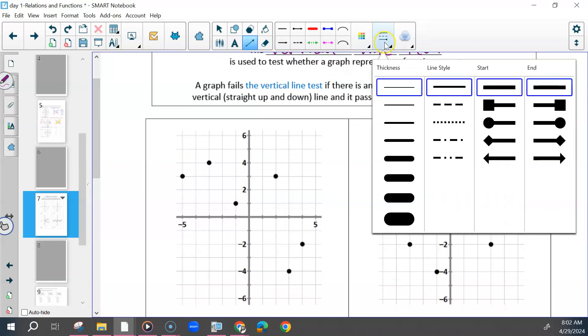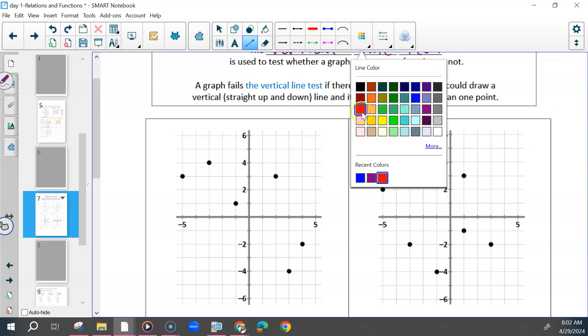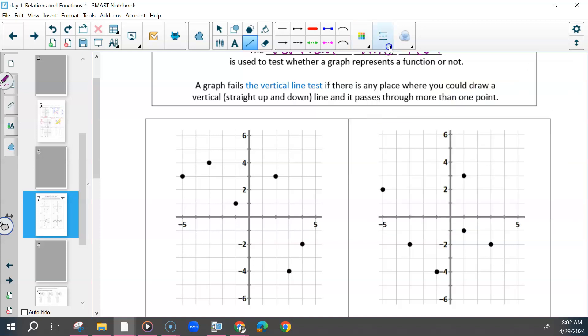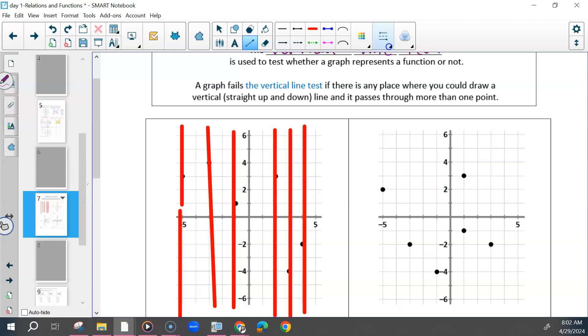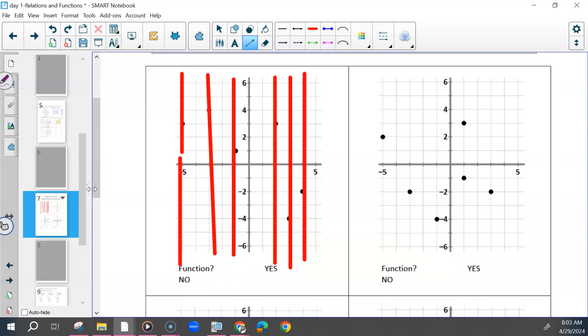So in this case, I'm going to draw a vertical line through all of these points. Do any of them touch more than one point? No. So this is a function.